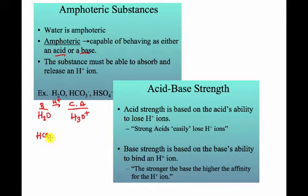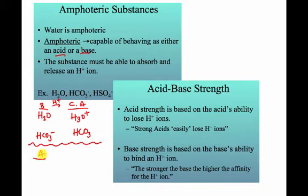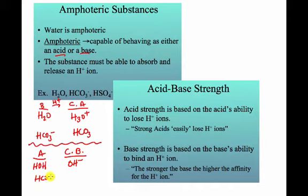HCO3- would be a base because it would take a hydrogen ion, so we add a hydrogen ion to go back to the conjugate acid. Now let's say we look at these as acids. If water is an acid, acids lose hydrogen ions, so to create the base, I write it with one less hydrogen ion. HCO3- with one less hydrogen ion would be CO3 2-. That's what makes HCO3- amphoteric — it can act as a base or it can act as an acid.